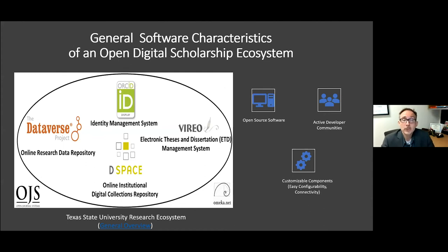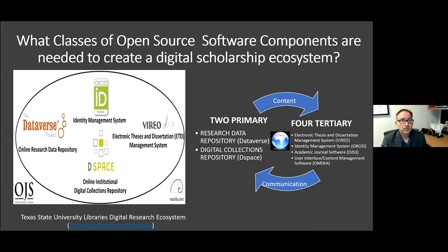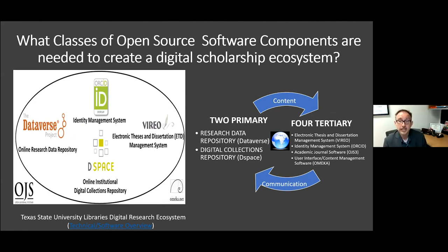What are the general software characteristics of an open digital scholarship ecosystem? One: open source software. Two: active developer communities. Three: customizable components for easy configurability and connectivity. What classes of open source software components are needed? Two primary: the research data repository and the digital collections repository. Four tertiary: an electronic thesis and dissertation management system, an identity management system, academic journal software, and user interface content management software — essentially content and communication.